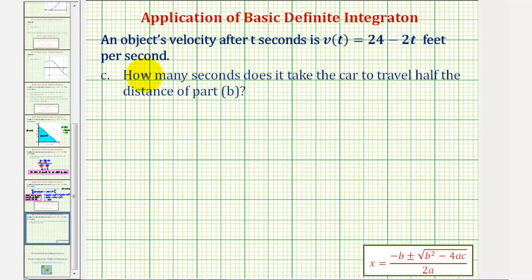And now for the last question, we want to know how many seconds does it take for the car to travel half the distance of part B. Well in part B, we discovered that it traveled 144 feet. So if we divide this by two to find half, that would be 72 feet. So our goal is to find how long it takes for the car to travel 72 feet.